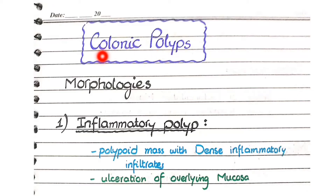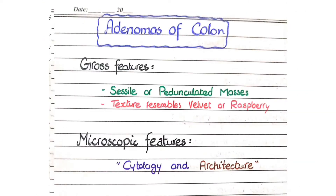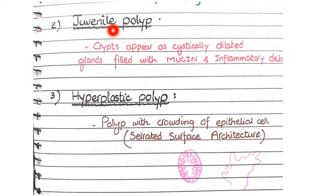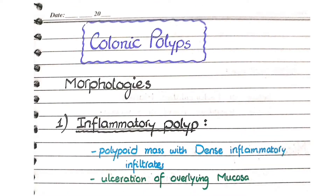In this video we will discuss the pathological features of colonic polyps and adenomas of the colon. Based on their morphologies, colonic polyps can be divided into three types: inflammatory polyps, juvenile polyps, and hyperplastic polyps.